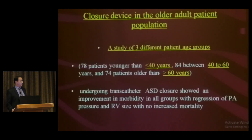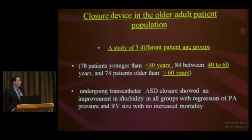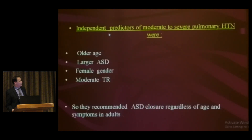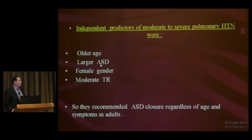A study of three different age groups — below 40 years, between 40 and 60, and above 60 years — found that transcatheter closure improved morbidity in all groups with regression of pulmonary pressure and no increased mortality. Independent predictors for worse outcomes were older age, larger defects, female gender, and moderate tricuspid regurgitation.